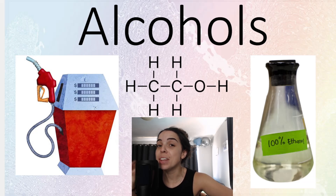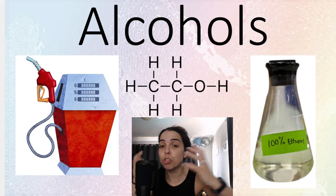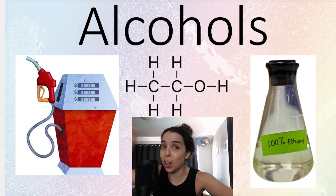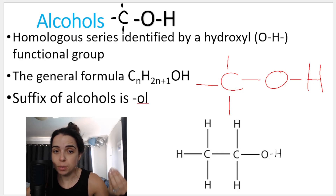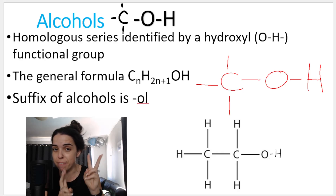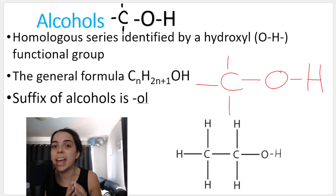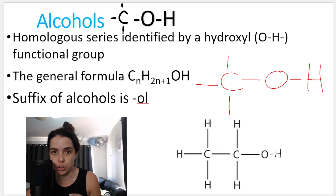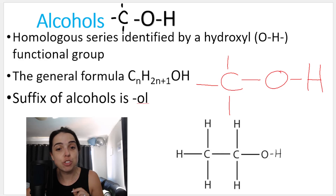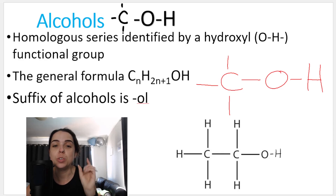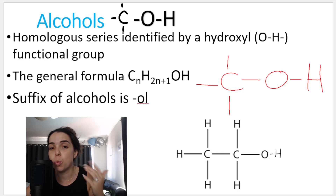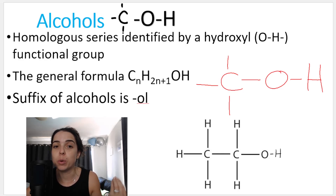In this video, we will be going over the next homologous series or group of organic compounds called alcohols. Alcohols are a homologous series, a family of organic compounds identified by a hydroxyl functional group. A hydroxyl functional group is an OH group. So as soon as you see an organic compound and you see an OH attached to one of the carbons, you know we are dealing with an alcohol.